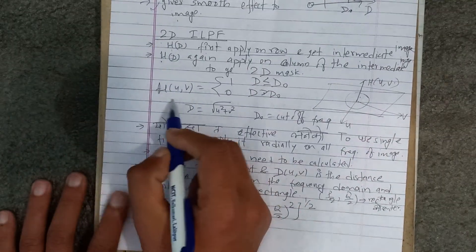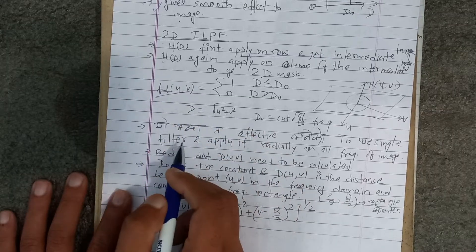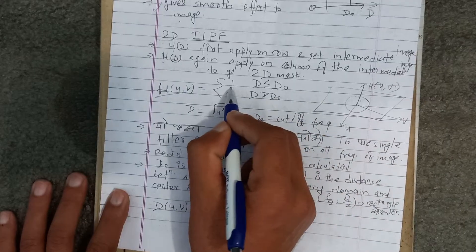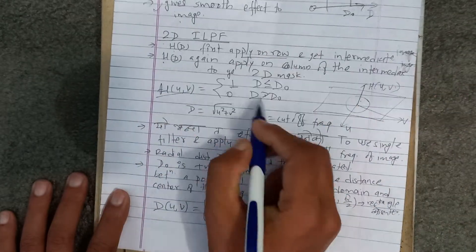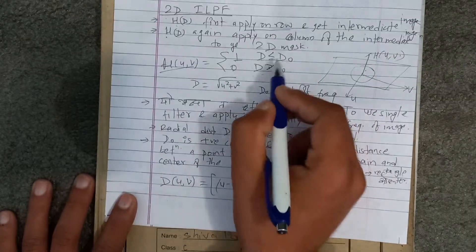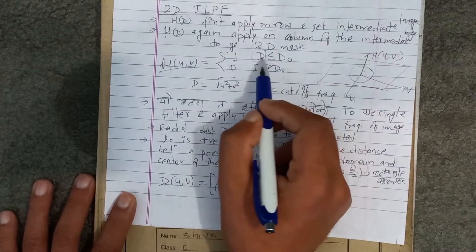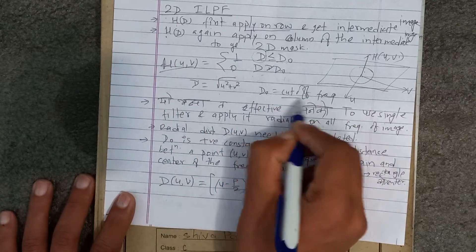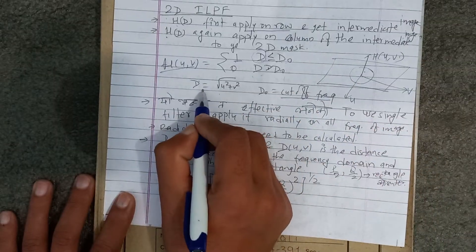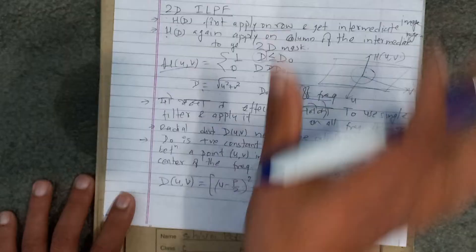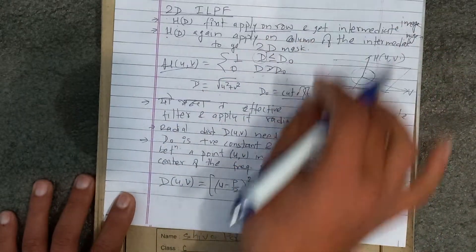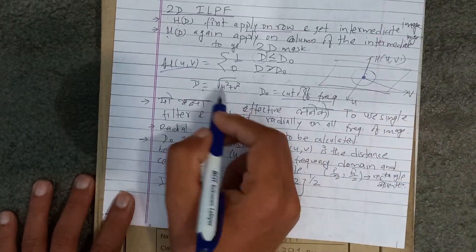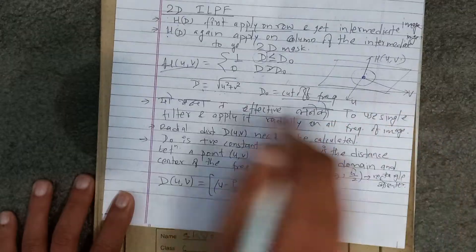And this is the same step — where do you apply the same function? To get a 2D mask, apply on the image. The function is: if d is less than or equal to d0, we have 1; if greater than d0, we cut off. So the distance d(u,v) is calculated from the center to the point (u,v) — that particular position. The center is at (u,v), so we calculate using the distance formula.